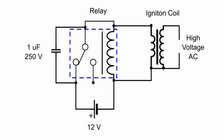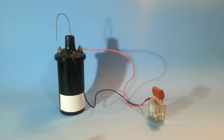This will generate an alternating current in the primary of the ignition coil that induces high voltage on the secondary. Here you can see the circuit.